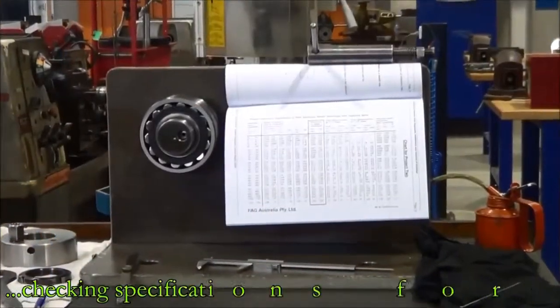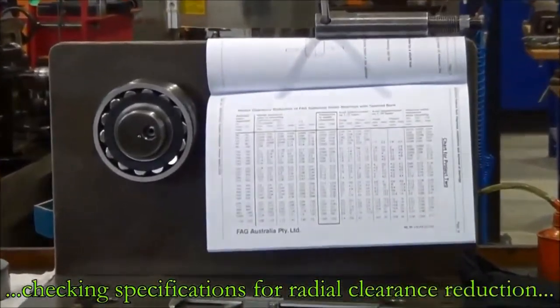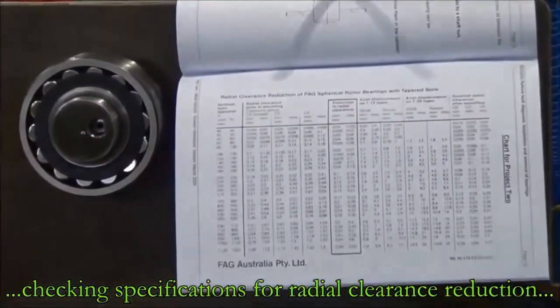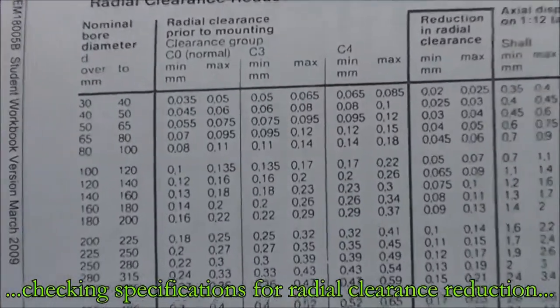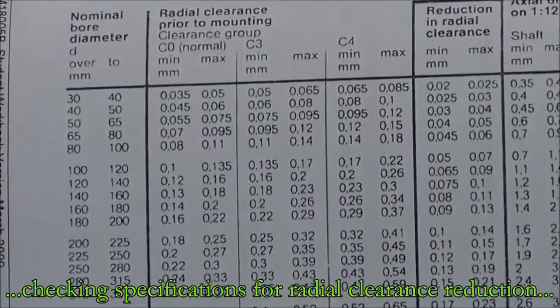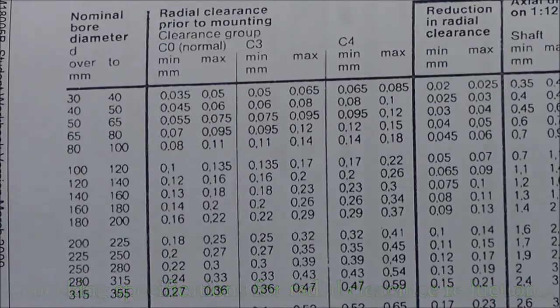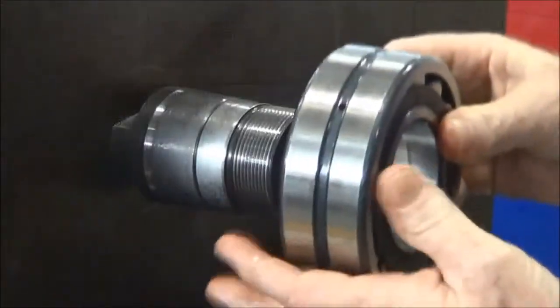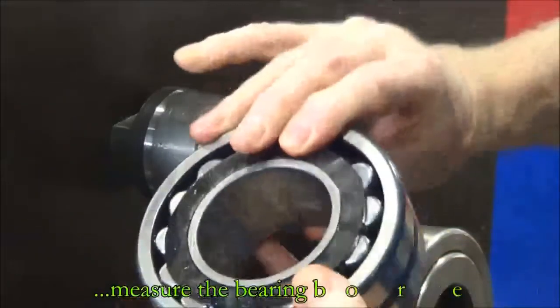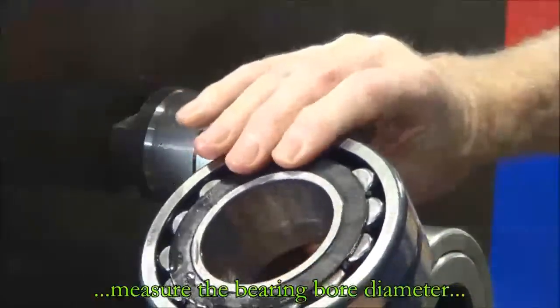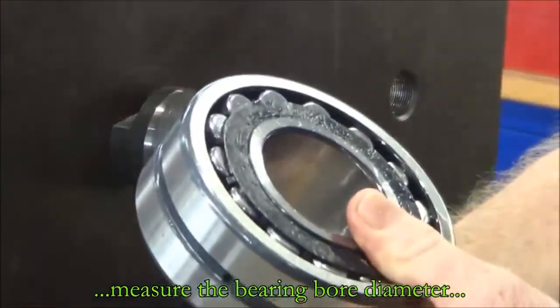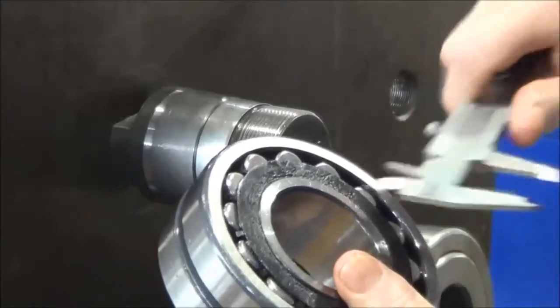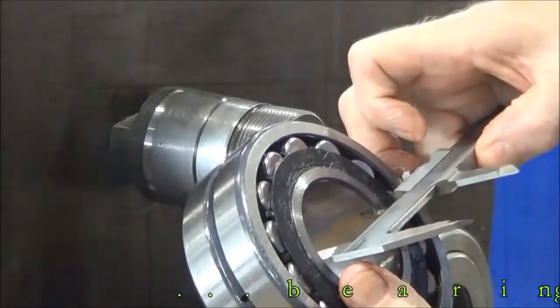First thing we're going to do is fit this bearing using the method termed the reduction in radial clearance. The first thing we need to know is the bore or the diameter of the bearing. We're just checking that with the verniers. The bearing checks out at 55 millimeters.